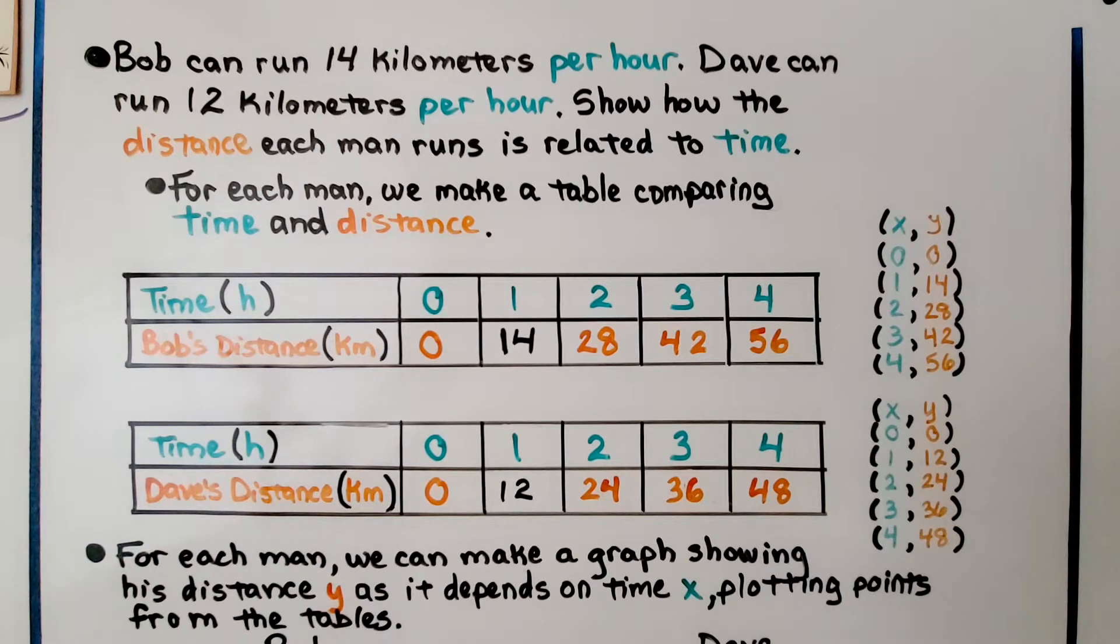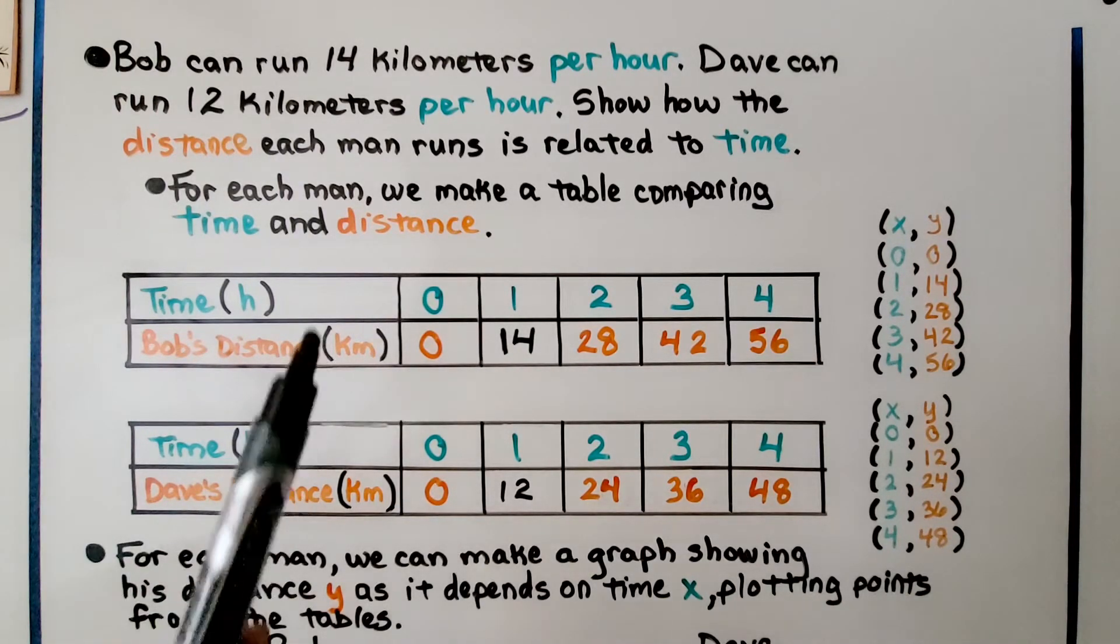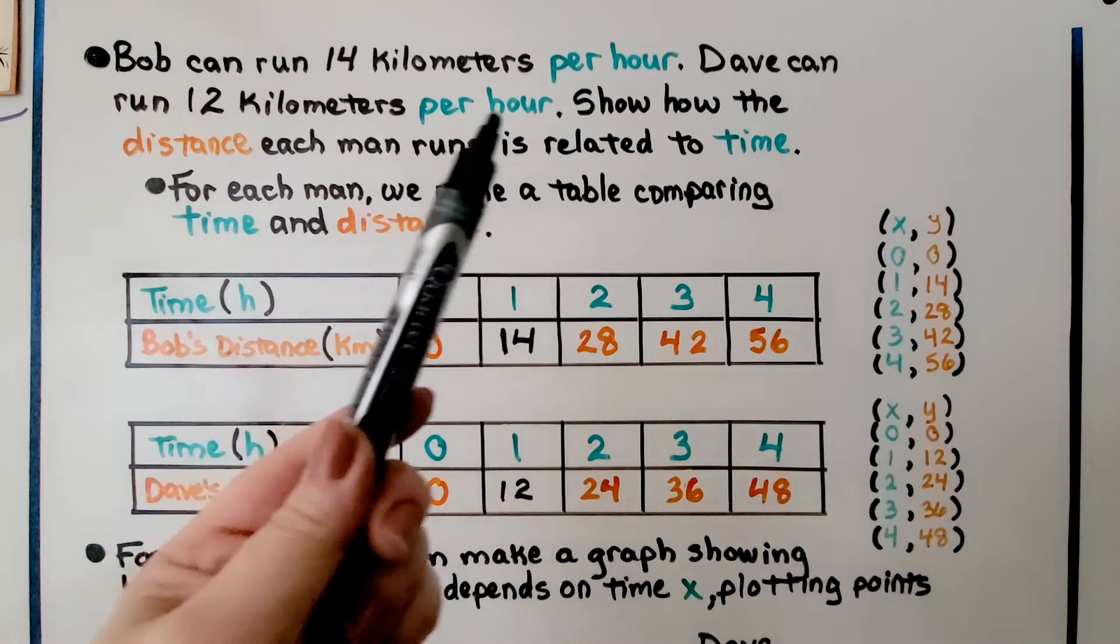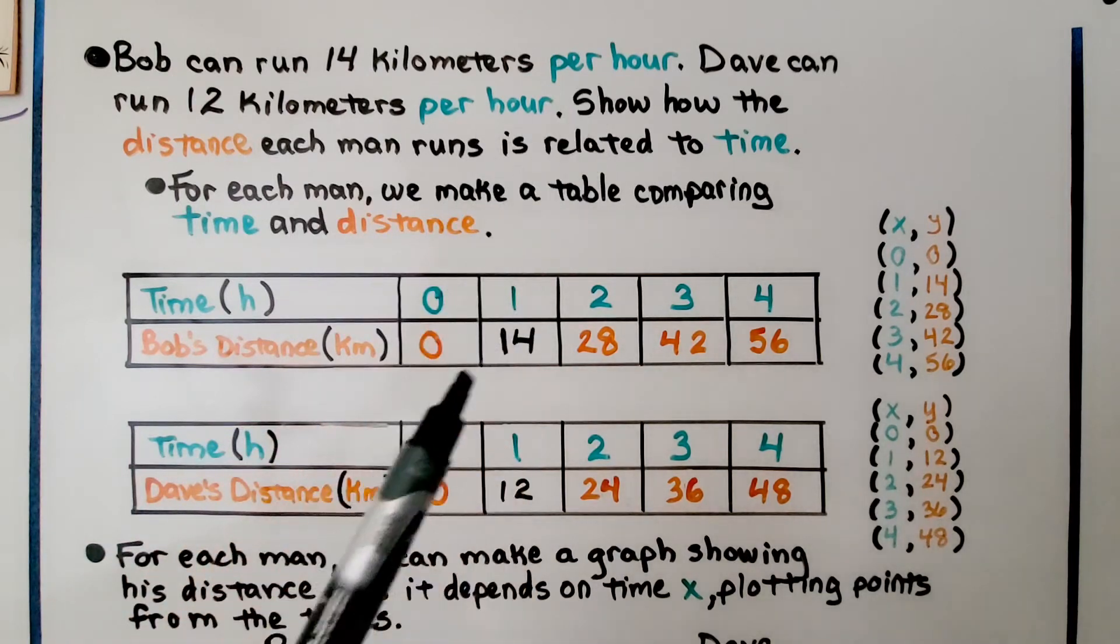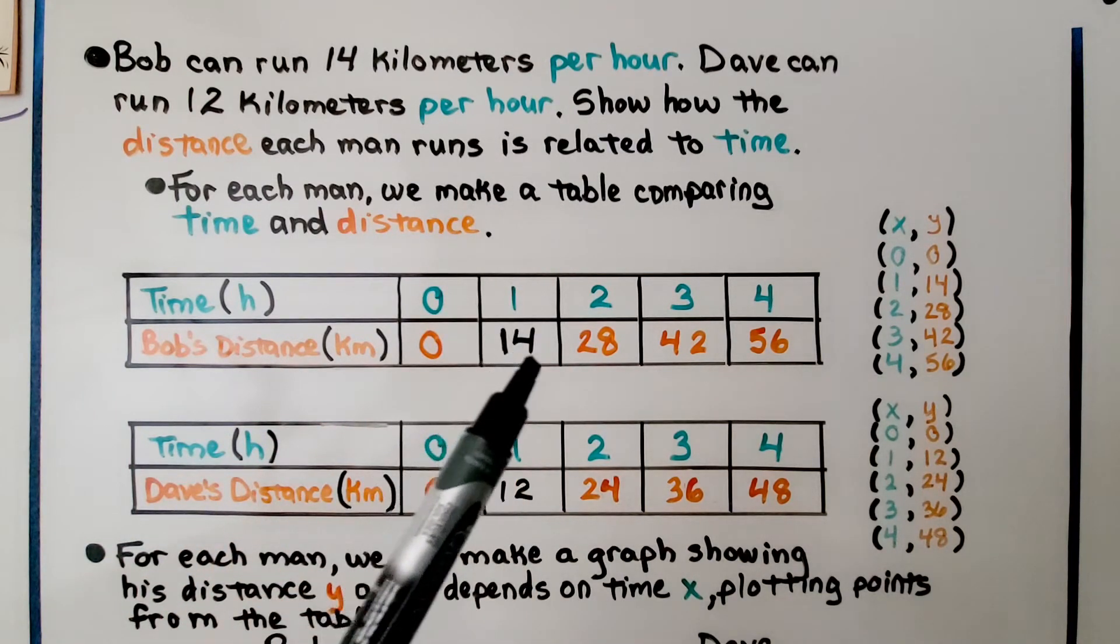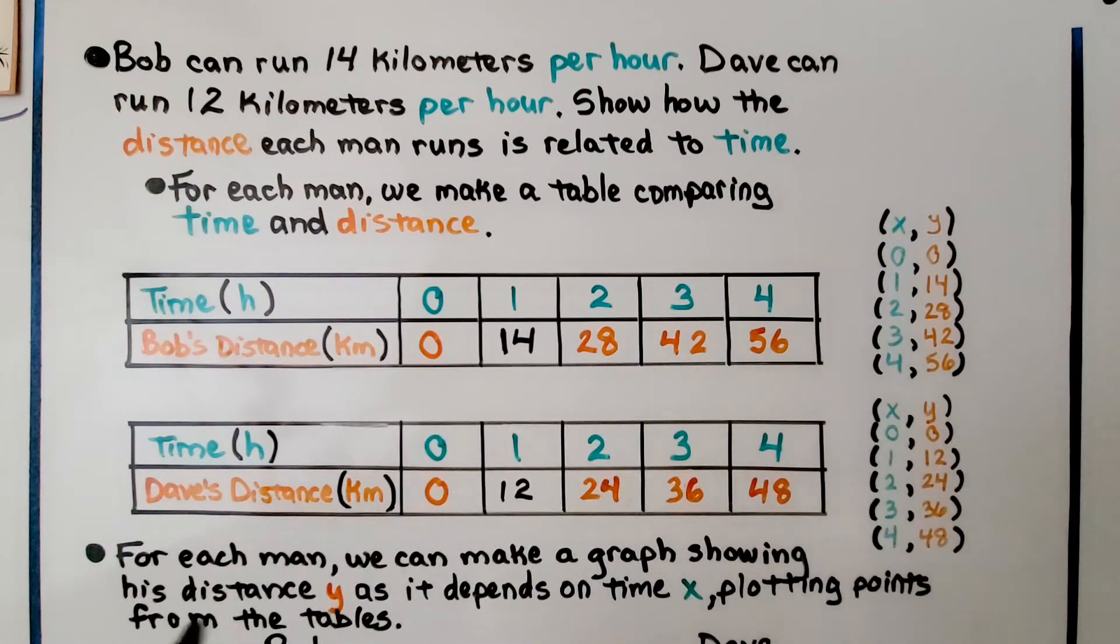For each man, we make a table comparing time and distance. So here's Bob's table. It says he can run 14 kilometers per hour. So that's one hour. And we can complete the table for his data.